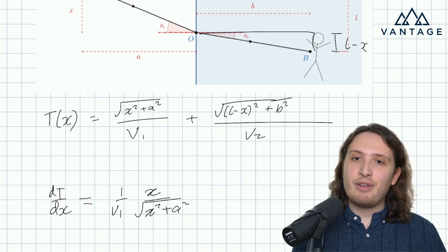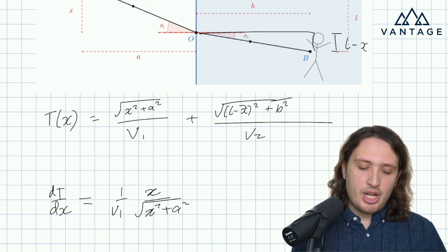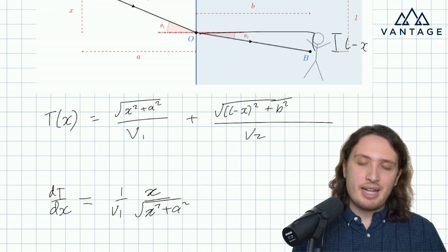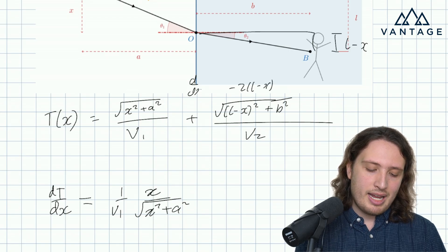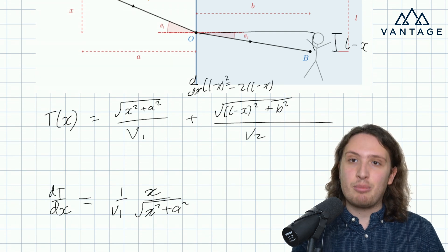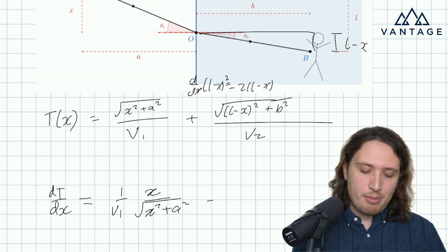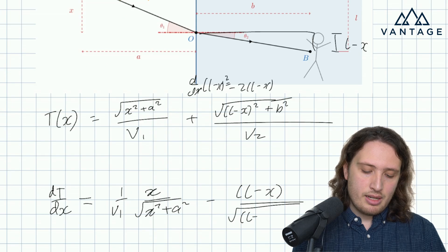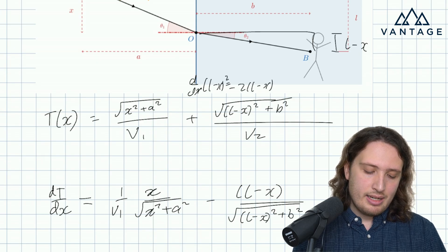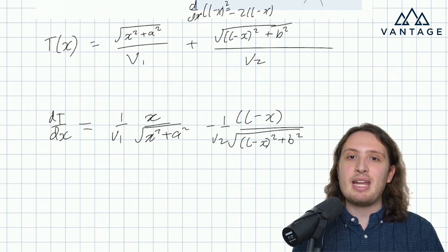The second term we differentiate very similarly, except now we get a minus sign from the chain rule, because the derivative of (l minus x)² is minus 2(l minus x) by the chain rule. Either way, we pick up a minus sign. So we get minus (l minus x) over the square root of (l minus x)² plus b², still multiplied by one over V2. The V's are constant, so they don't participate in the derivative.